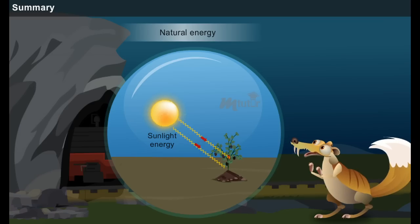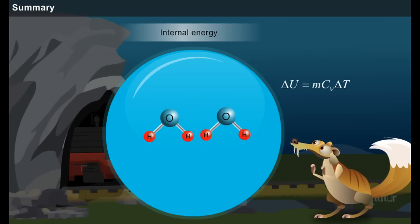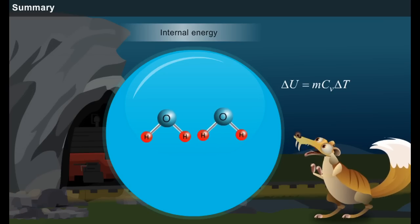Internal energy is the microscopic level energy which is the sum of all kinetic and potential energies, and it is denoted as delta U.